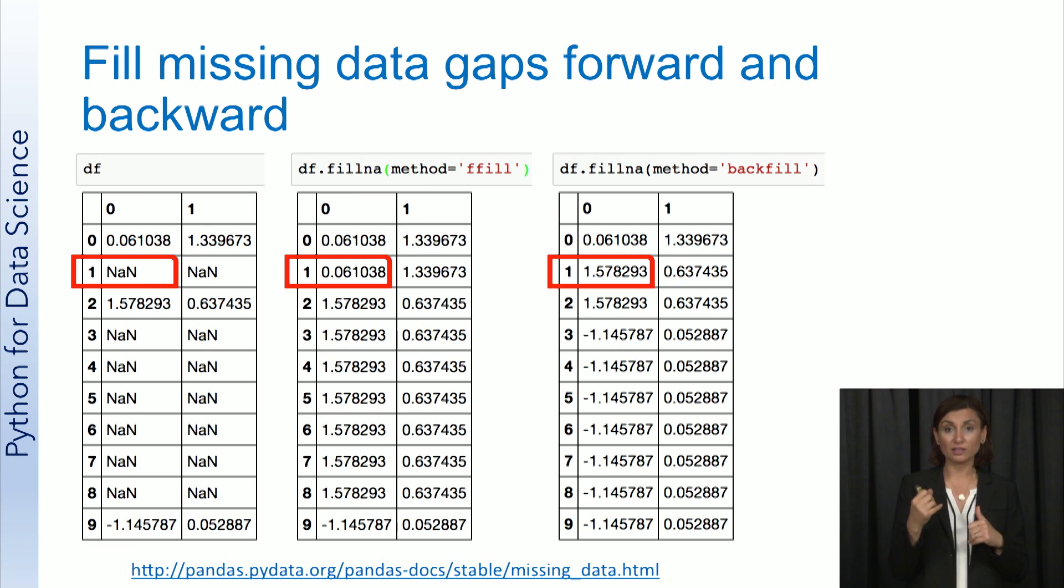In the backward fill, the same row gets replaced by the value in row 2, column 1. So it's going upwards in the data frame.